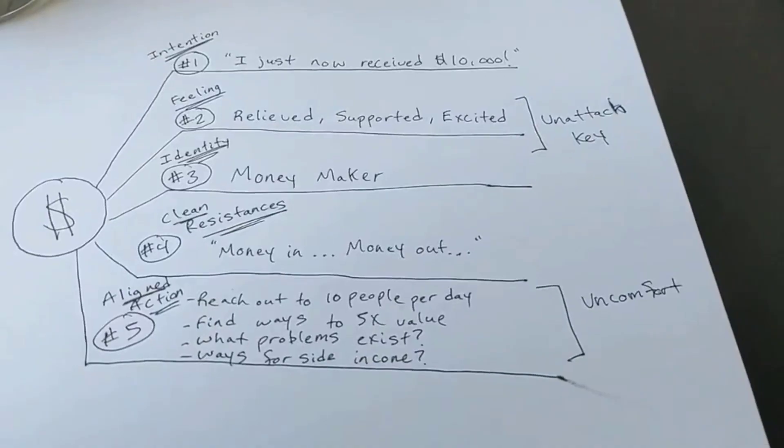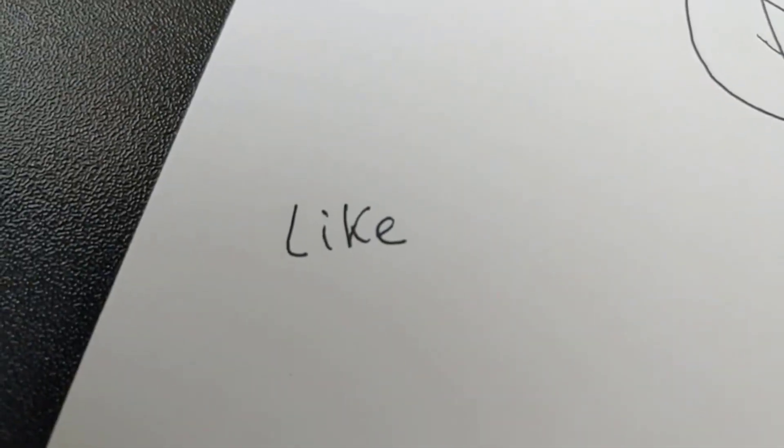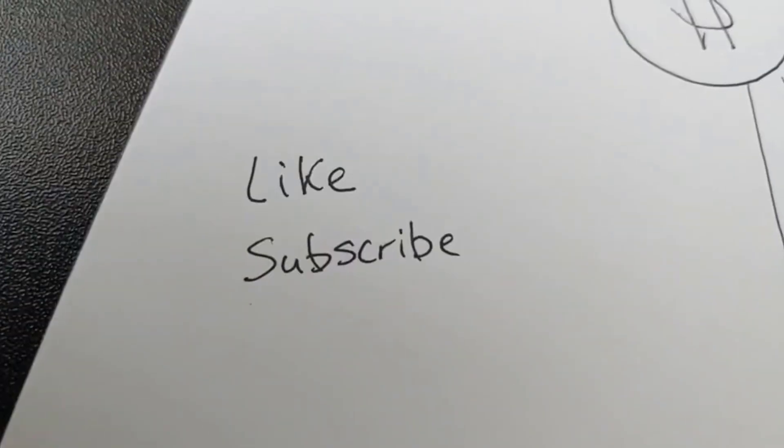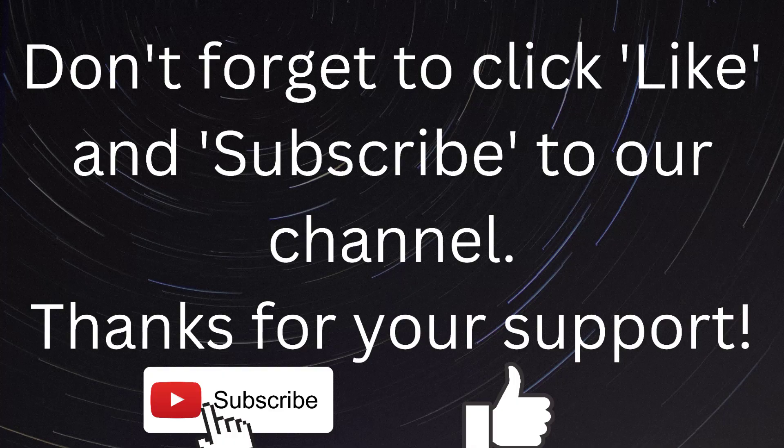So the unattachment part, number two, and the aligned action, number five, are really important. Now, number four, we're going to go ahead and do in another video as well. If you haven't already, throw a like on the video if this was helpful to you and subscribe to our channel.